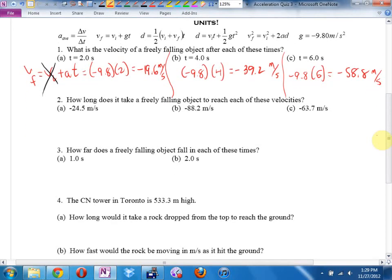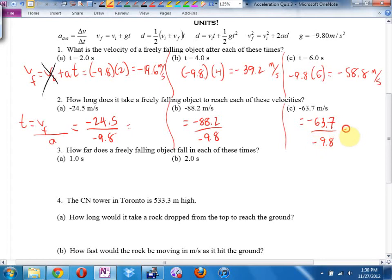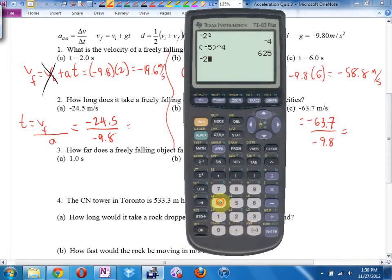Number two, how long does it take a freely falling object to reach each of these velocities? Again, I'll divide it into three. This time they're asking me to find time. And they're giving me V final. In free fall, unless they say different, we assume V initial is zero. T equals V final minus V initial all over A. But as a matter of fact, V initial is zero, so it's just V final over A. It's going to be negative 24.5 over negative 9.8. Negative 24.5 divided by negative 9.8: 2.5 seconds for the first one.